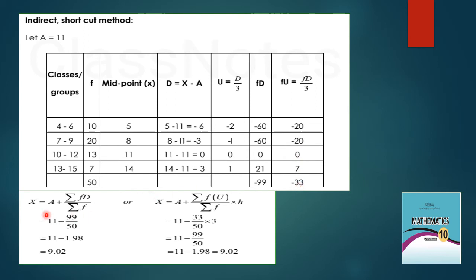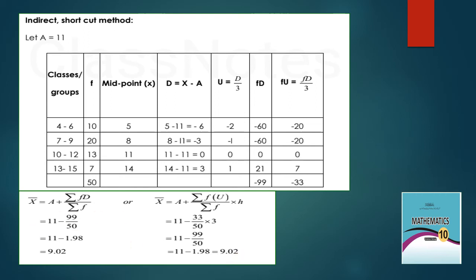Remember these two formulas: using d — x-bar = A + summation(fd)/n; using u — x-bar = A + (summation(fu)/n) × h. Using the second formula: x-bar = 11 + (−33/50) × 3 = 9.02. Both formulas give the same result of 9.02.